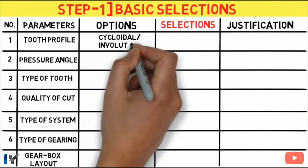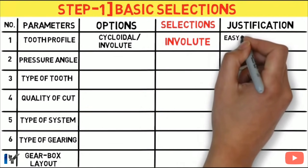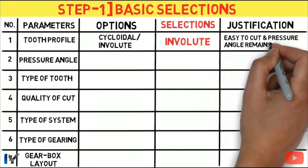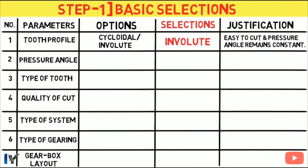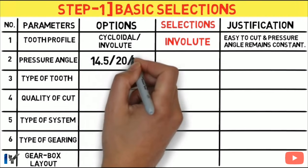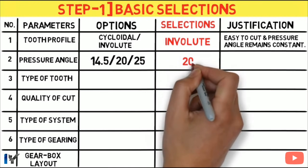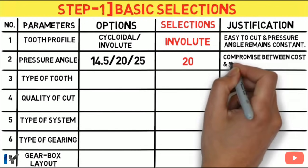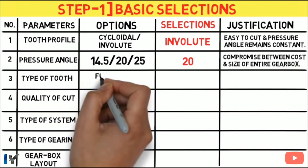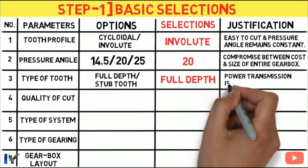Tooth profile can be cycloidal or involute. Here I am choosing involute profile, because it is easy to cut and pressure angles remain constant. For pressure angle, three standard values are available: 14.5°, 20°, and 25°. The most common pressure angle is 20°, as it is a compromise between cost and size of the entire gearbox.